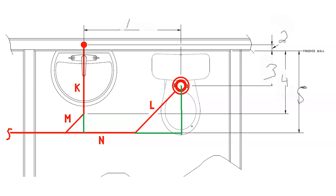If we're trying to find the travel and we know either the advance or the offset, we take that known number and multiply it by 1.414, and that gives us the travel — also known as the hypotenuse. Conversely, if we know the travel and want to find the offset or advance, we take the travel and multiply it by 0.707.